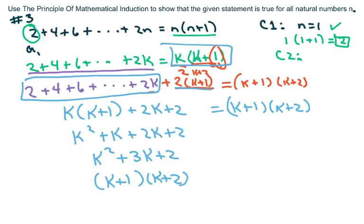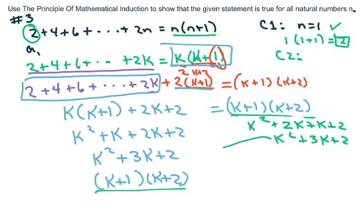Now actually, when you do these, you can kind of look and see what it's supposed to look like. You could also, on this side, you could have foiled this, get k squared plus k plus, this would have been 2k plus k plus 2, and this would have been k squared plus 3k plus 2. So those two match.